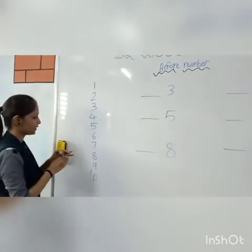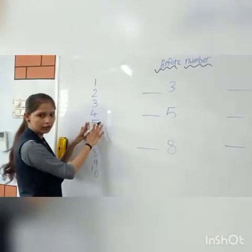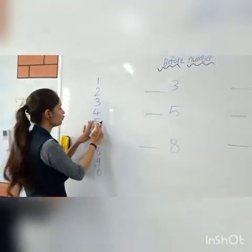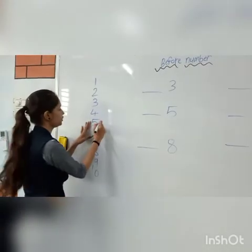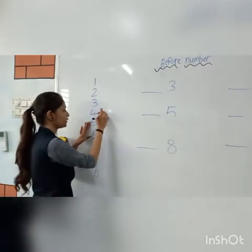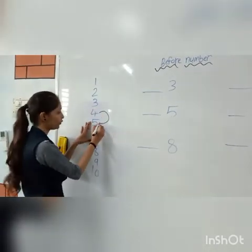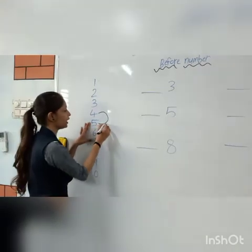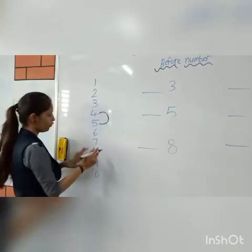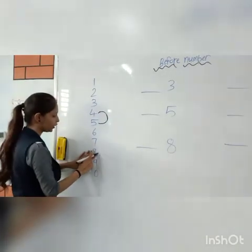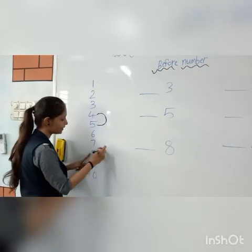Another example. This is 5. So what comes before 5? The answer is 4. What comes before number 8? The answer is 7.